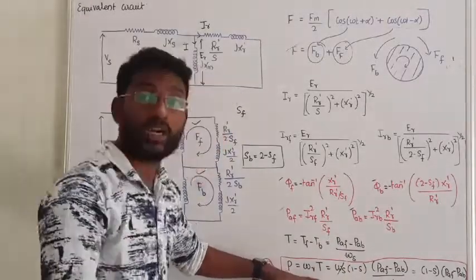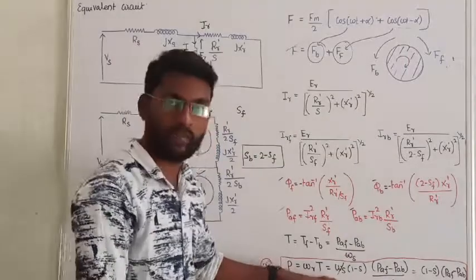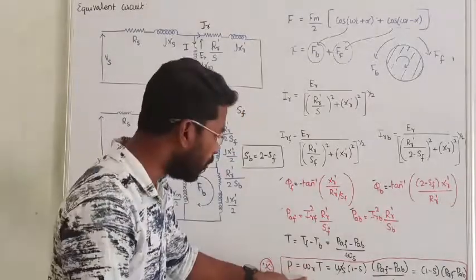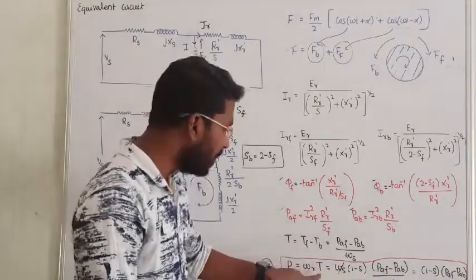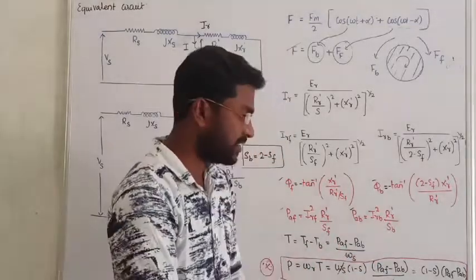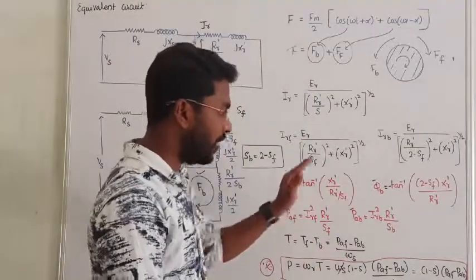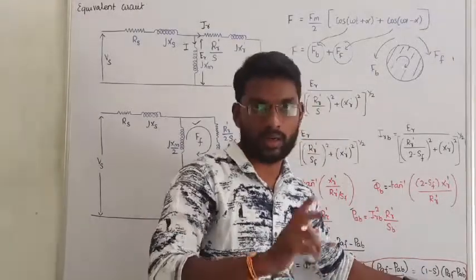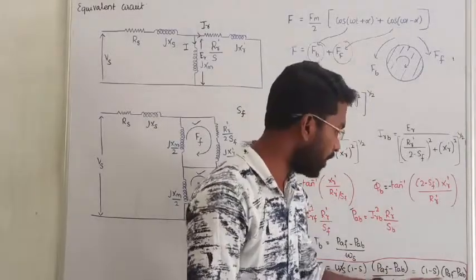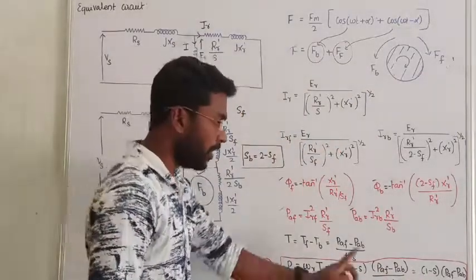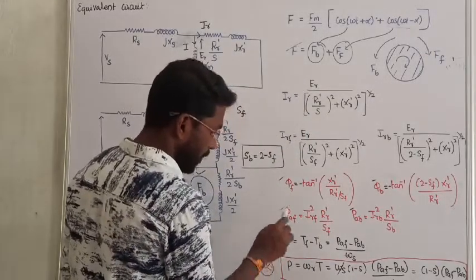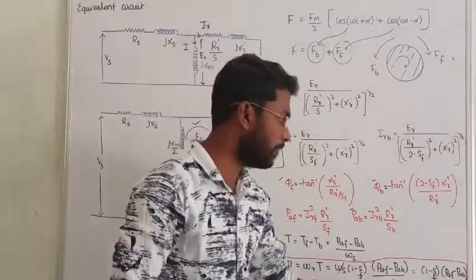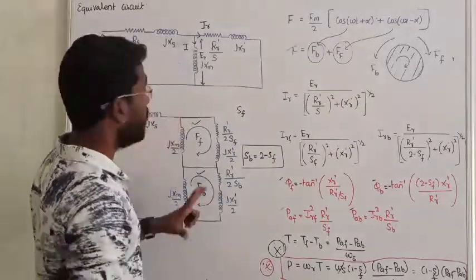The total resultant mechanical power can be calculated using rotor speed omega_R. Total mechanical power equals omega_R times T_F, which equals omega_S times (1 minus S) times T_F. After cancellation, the resultant total mechanical power equals (1 minus S) times the net air gap power. When you subtract forward and backward contributions, you get the total power developed by the induction motor. In the formula, the slip used is the forward slip, so don't get confused - this is the normal forward slip for calculating the total power developed.